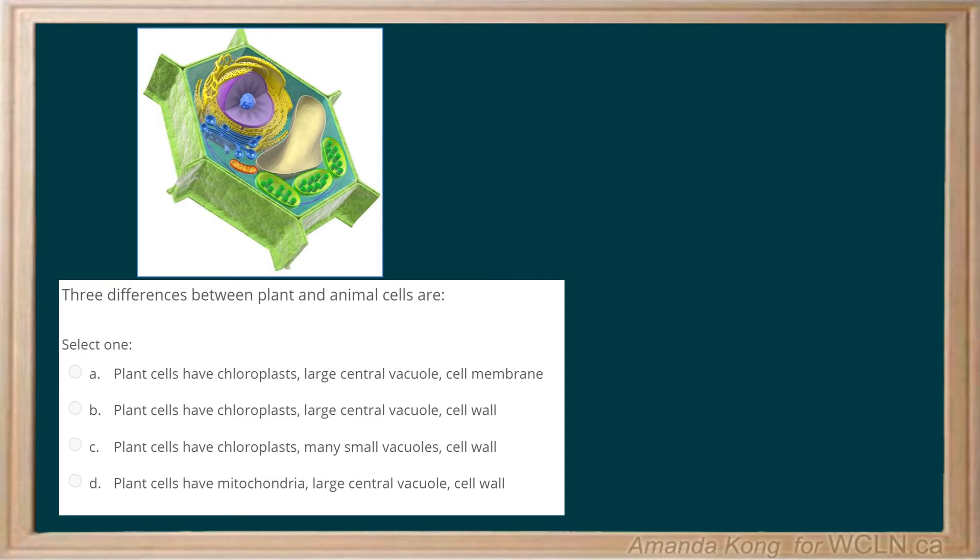C. Plant cells have chloroplasts, many small vacuoles, and a cell wall. D. Plant cells have mitochondria, a large central vacuole, and a cell wall.